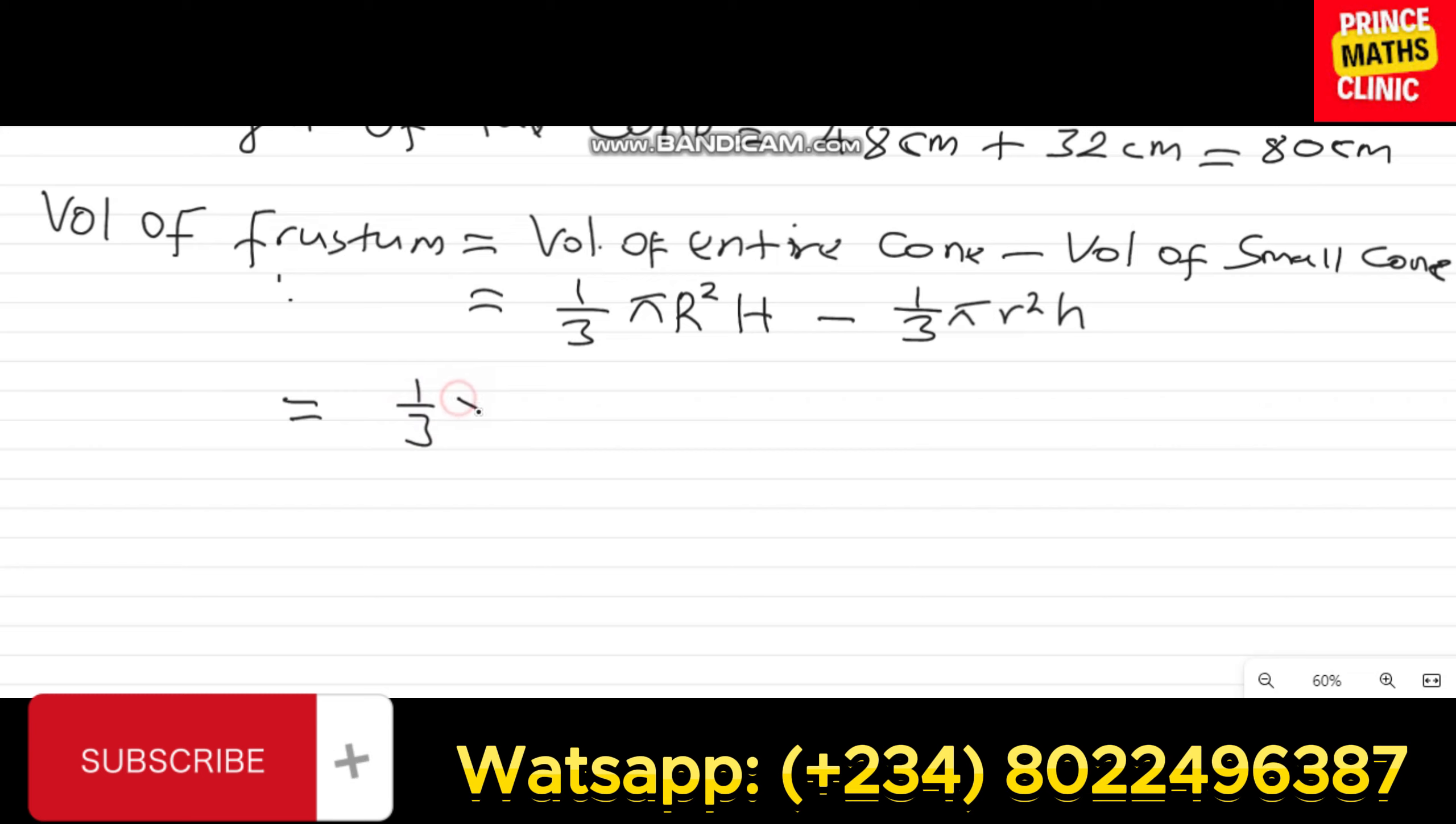So, this will become 1 over 3 times pi, which is 22 over 7 times the radius of the open side of the bucket is 20 as we have seen above. This will count 20 over 1 times another 20 over 1. Then, the height is this 80 centimeters. Minus, then you have 1 over 3 pi is 22 over 7.